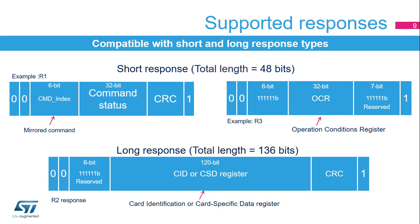When a short response is received, the command status is saved in the SDMMC register, and the mirrored command index, when available, is copied to the SDMMC RESPCMD register. Long responses have a total length of 136 bits and are composed of the 120-bit CID-CSD register content with the StartBit, StopBit, and CRC7 checksum. When received, the CID-CSD card register is copied to one of the four SDMMC RESPX registers.